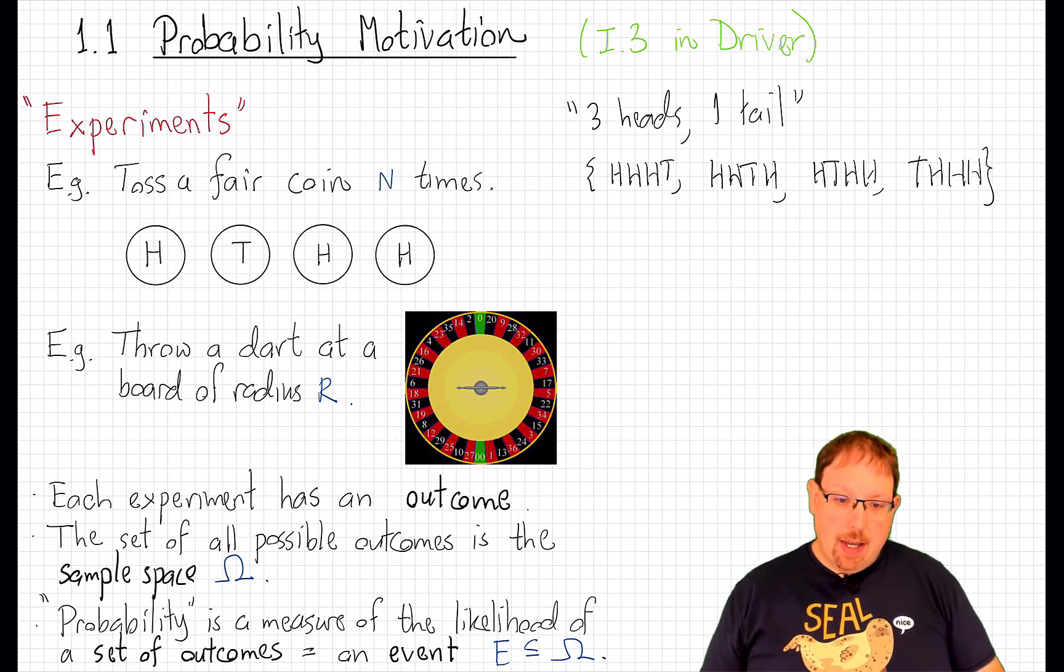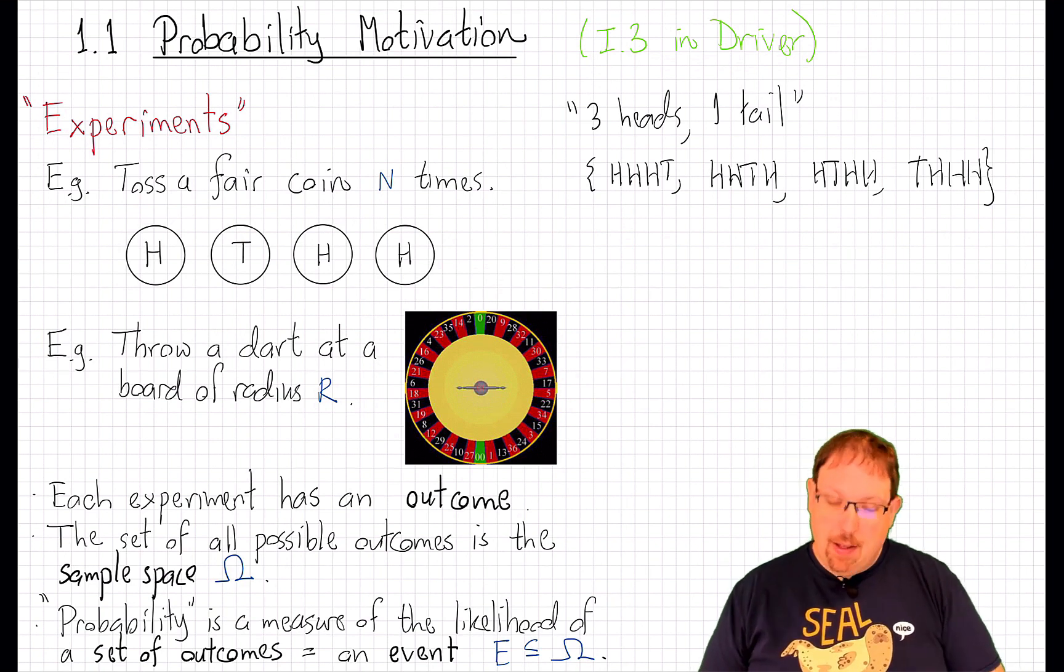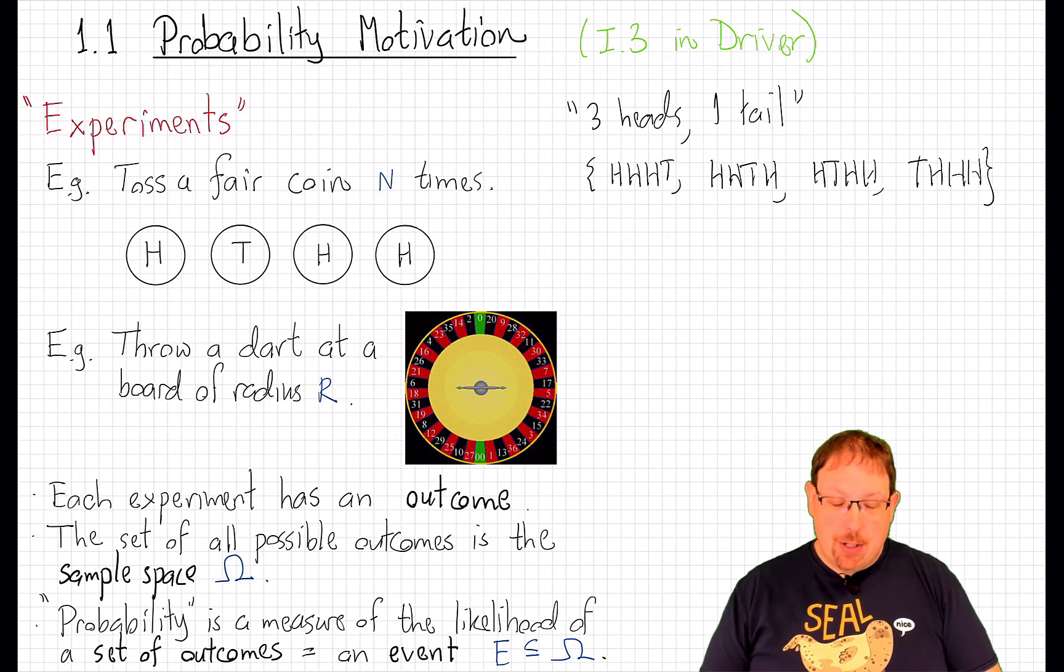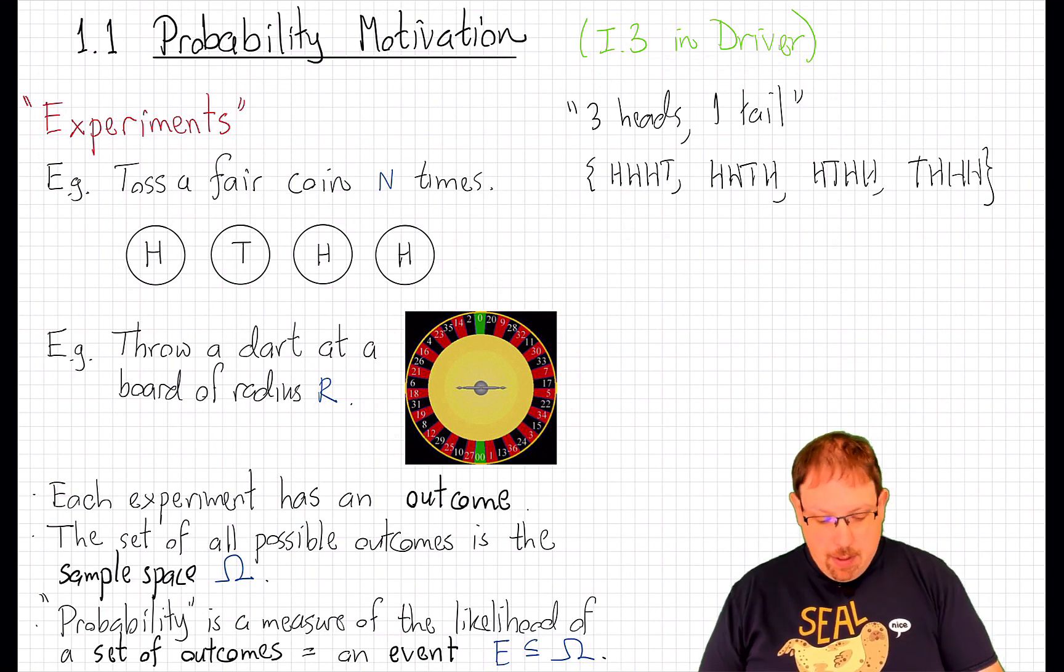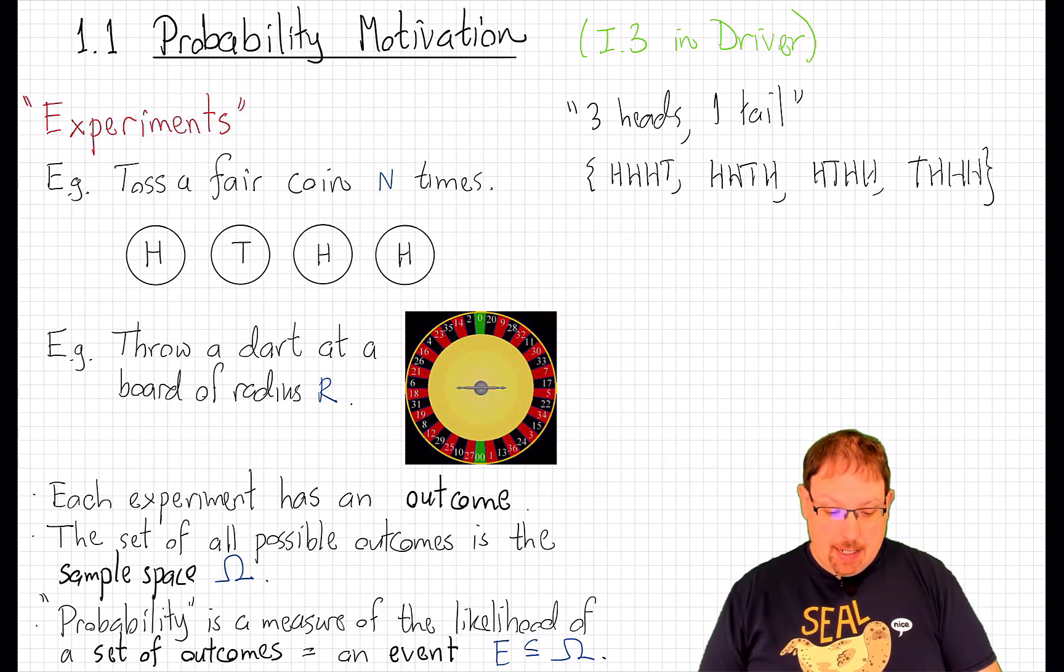Now a bullseye could be interpreted as the mathematical point at the center of the circle. In that case, the probability of actually hitting a bullseye would be 0. But really the bullseye is a small but positive radius disc at the center.